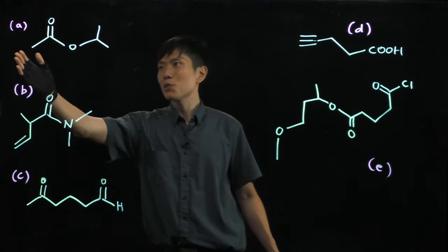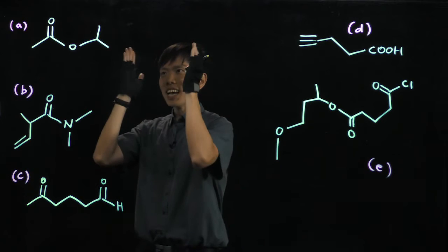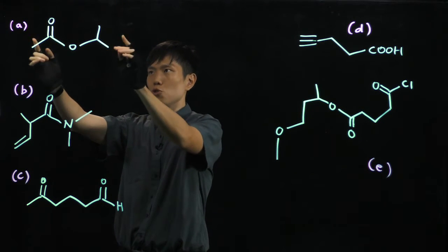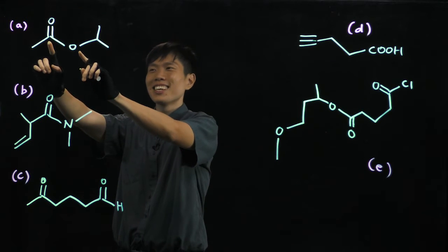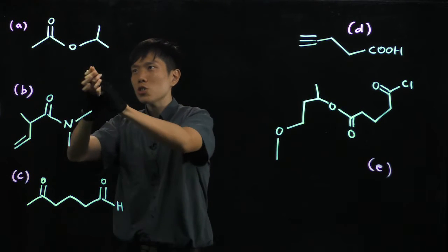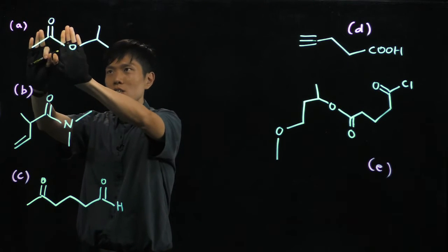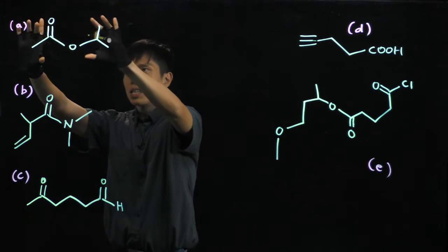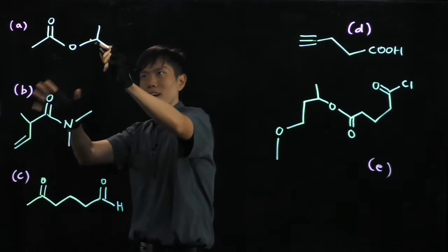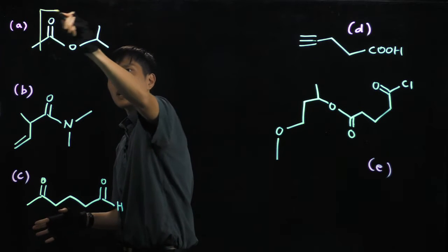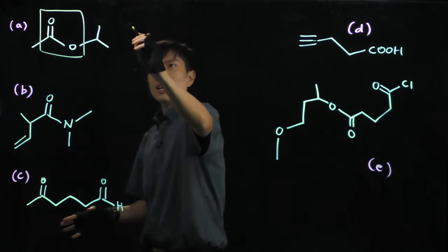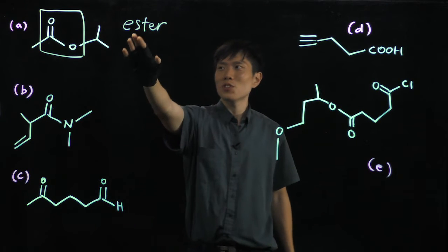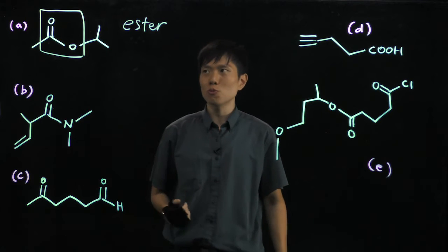Let's begin with molecule A. I noticed that there are some hetero atoms here that are not carbon or hydrogen — I noticed oxygen. So what I do is, I do not just look at this C=O double bond and ask if this is a ketone or what. I look at the bigger picture, zoom out a bit and see the neighbors. And I recognize that this part gives me an ester linkage. So this is an ester functional group.